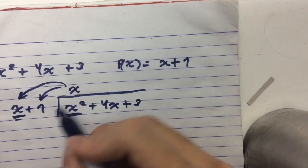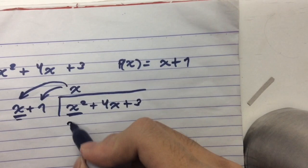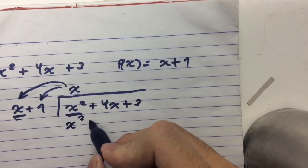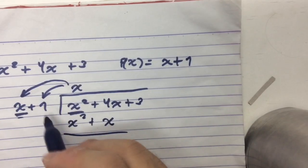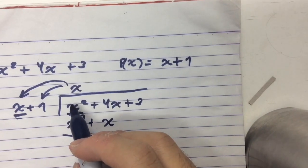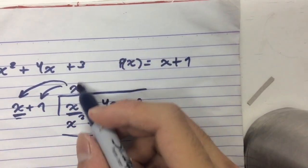So if we multiply this, x times x is x squared and x times 1 is x. And make sure to watch out for the signs because I actually committed a lot of errors just because of the signs.